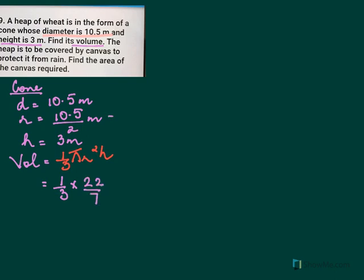Now your h. Here I know 10.5 over 2. When you work out, you can keep it that way or you can use 5.25. So your r here is 5.25, the whole square. And your h is 3.